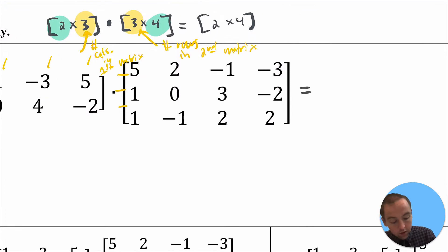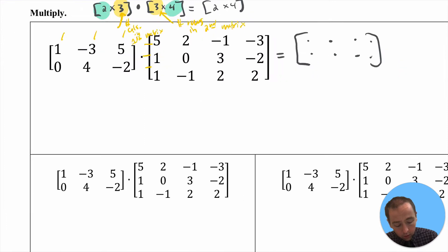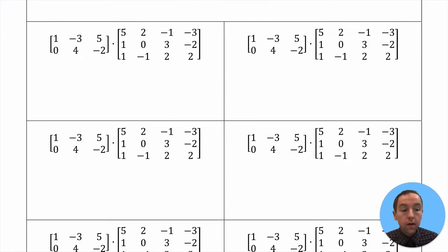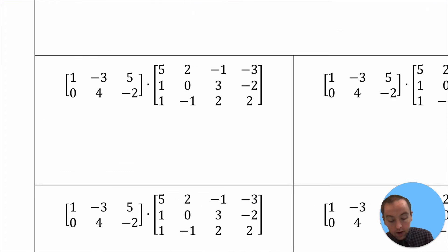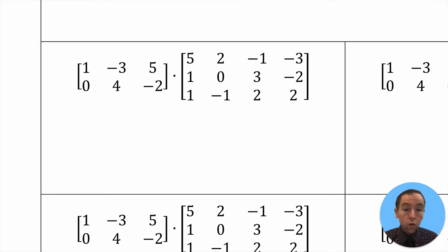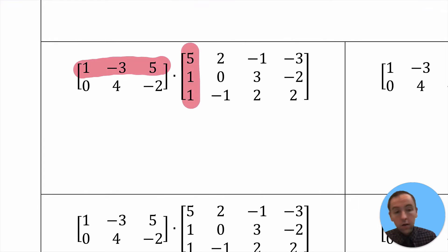I'm going to sketch that out so we know we're going to get elements in each of those positions. The way that matrix multiplication works is that you always take an entire row from the first matrix — not columns, an entire row. So I'm going to choose the first row. And then from the second matrix, you always use columns. So I'm going to choose just the first column.